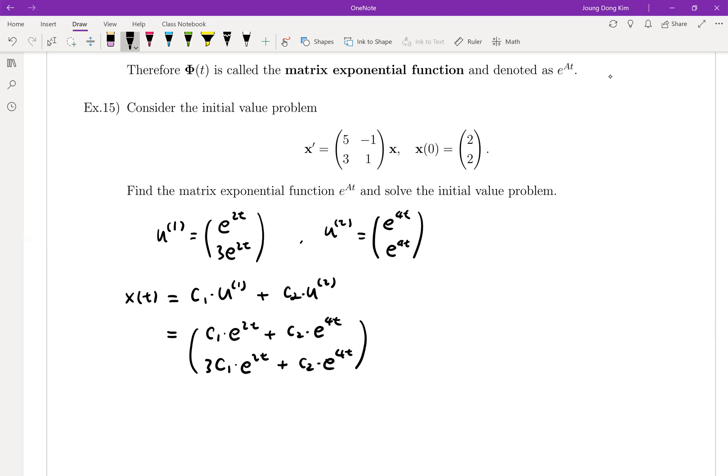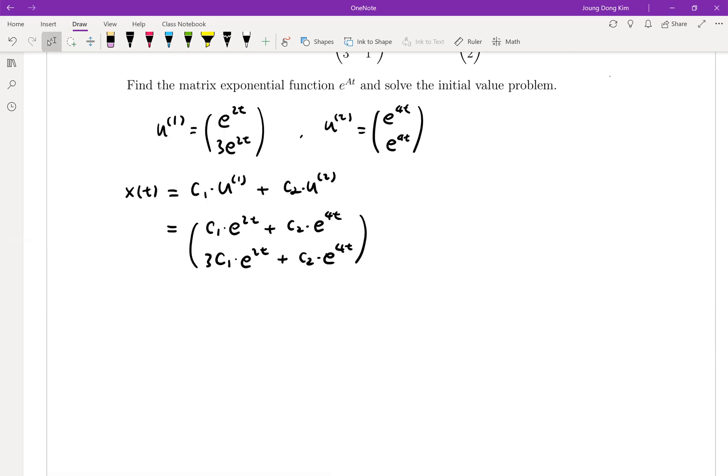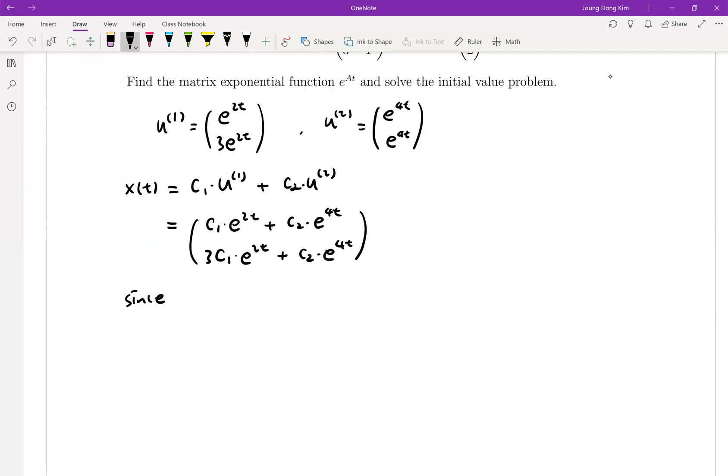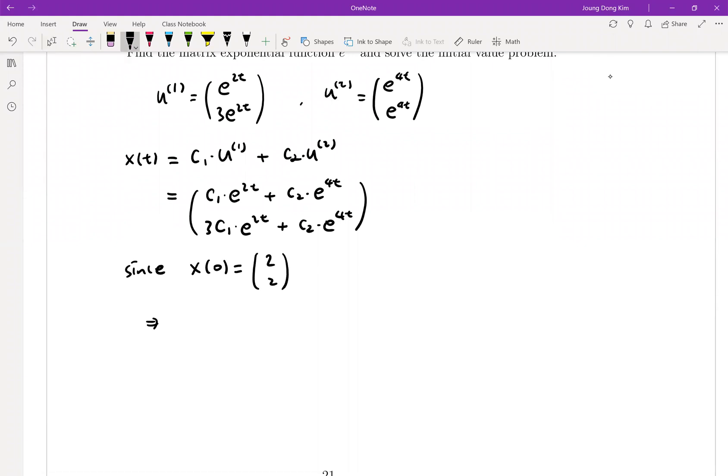Now once you have this form, we're going to apply the initial condition. Initial condition was given by x(0) equal to (2, 2). And plug in 0. It will be c1 plus c2 because the exponential function is already equal to 1. So c1 plus c2 is equal to 2.